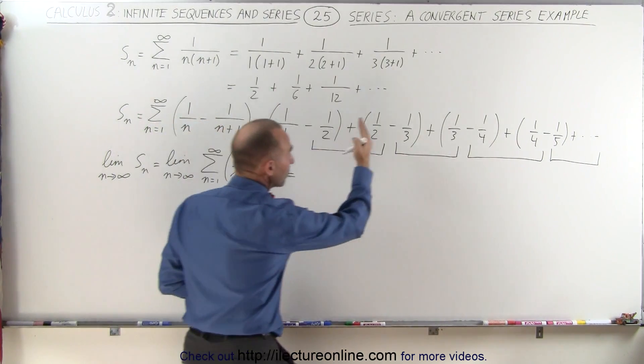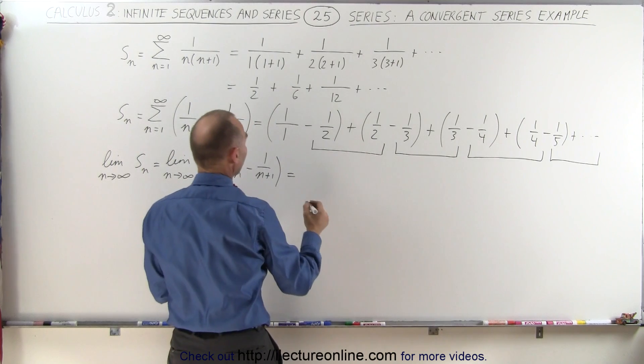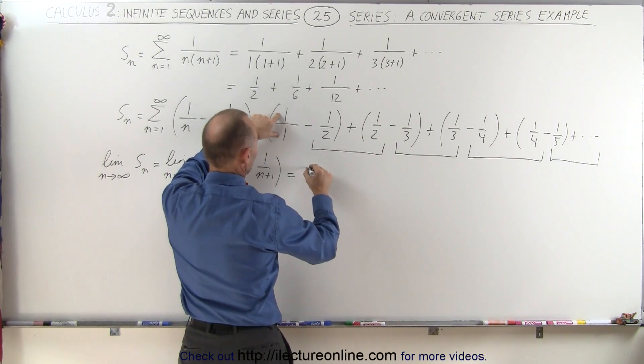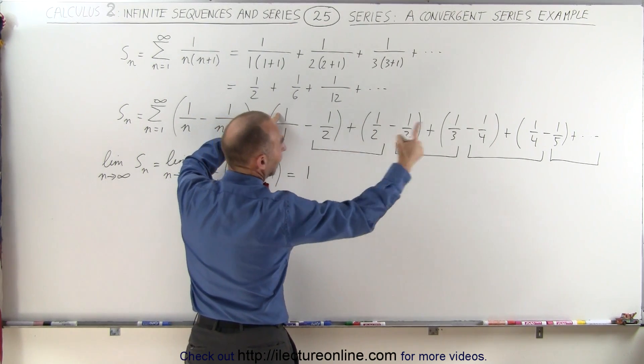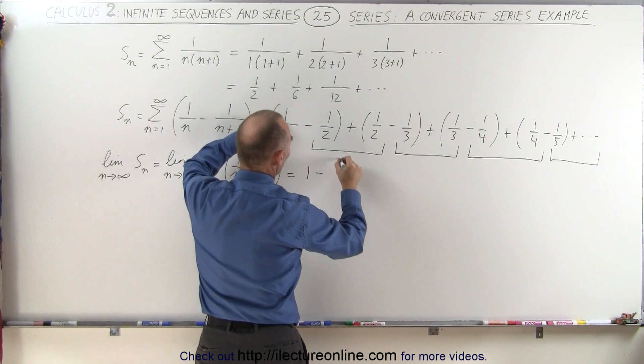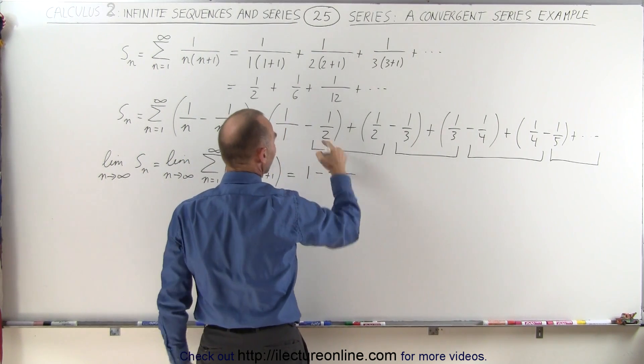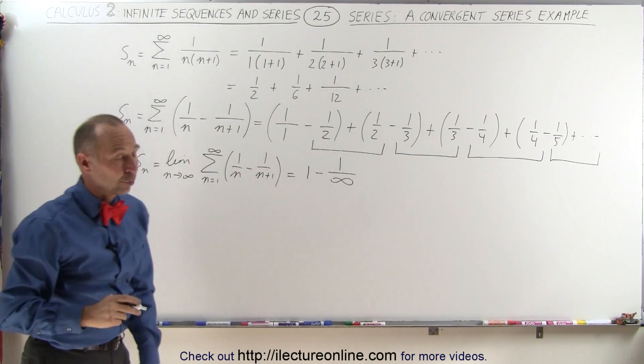And then you realize that all these middle terms disappear, and all that's left is the very first term, which is 1, and all that's left in the very end would be minus 1 over, and if n becomes infinity, then this will be infinity. And of course, 1 minus 1 over infinity is simply equal to 1.